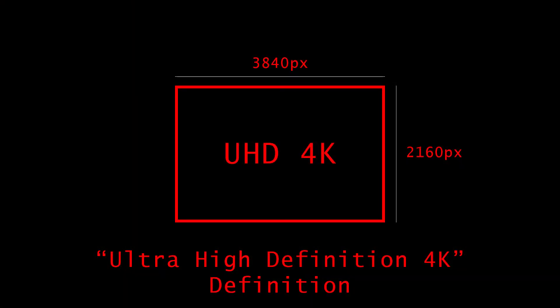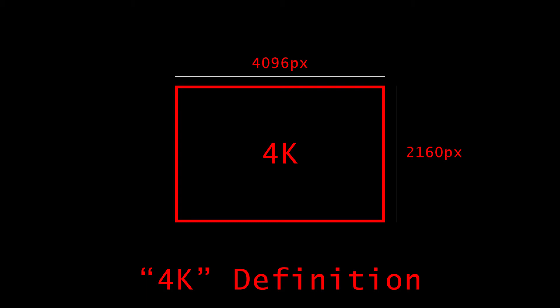Ultra high definition 4K, also known as UHD 4K, is 3840 pixels wide. They call it 4K, but it's not really 4K because it doesn't have 4,000 pixels — they call it ultra high definition to get around this, basically upscaling it. That is 3840 wide by 2160 tall. The next step up is true 4K — that is 4,096 pixels wide by 2160 tall.